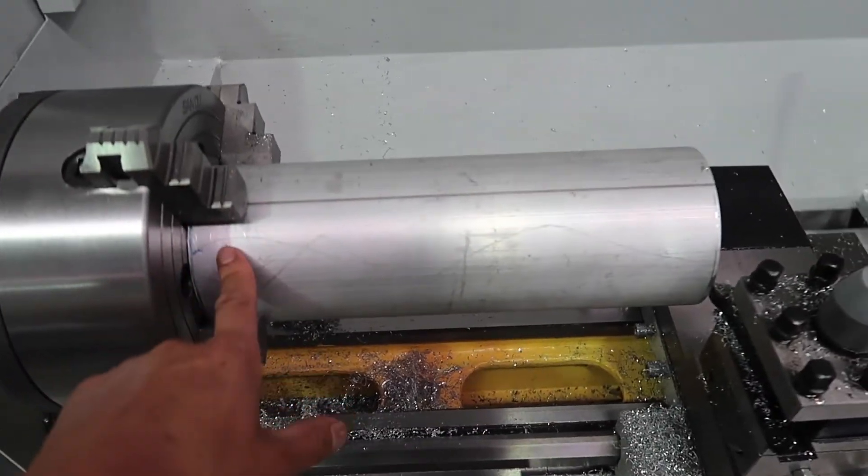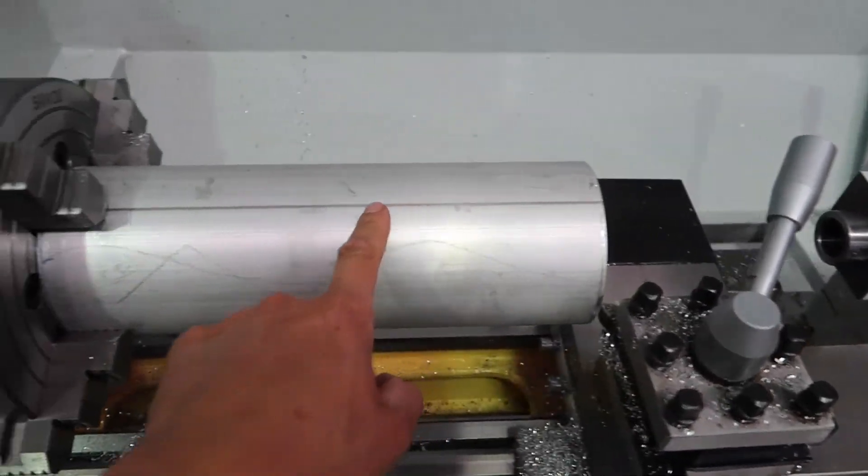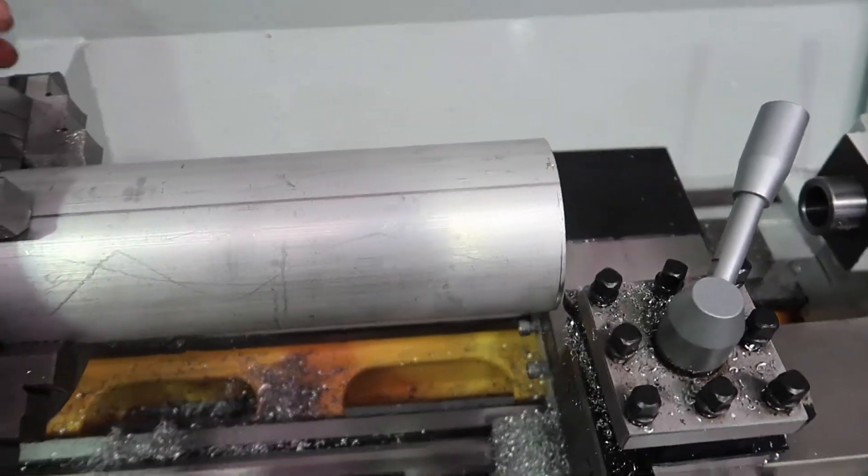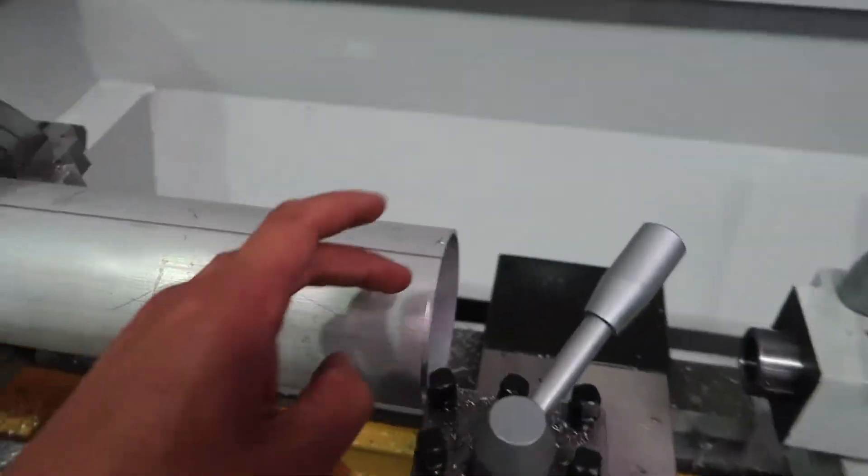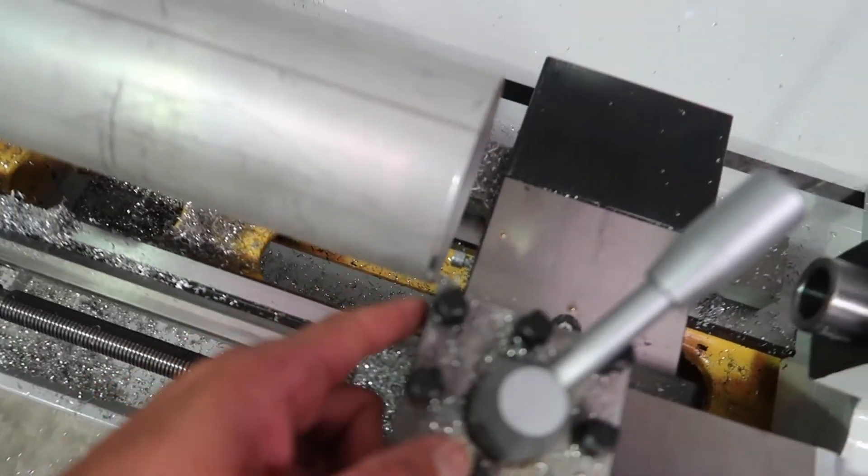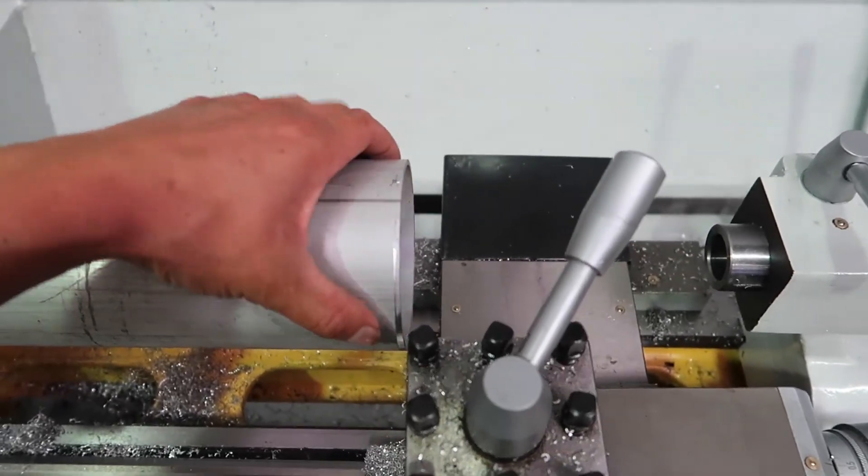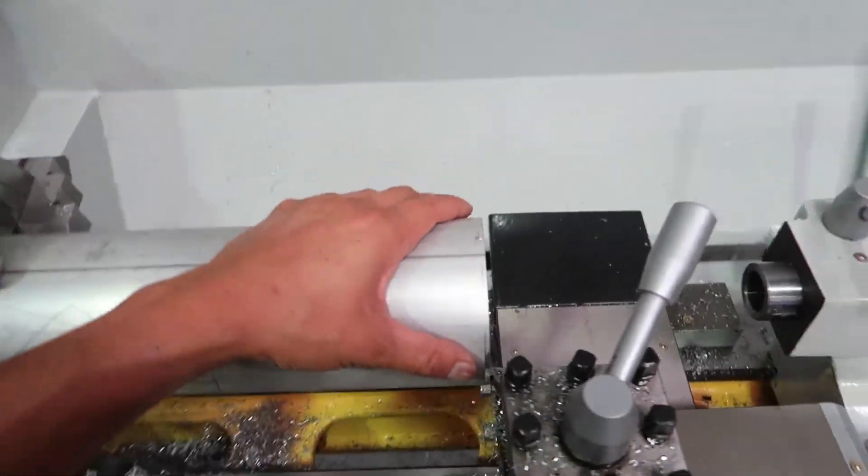All right, so that's been dialed in. That's been dialed in across there. And I ran the dial indicator along there and it seems completely level or very level. So now I'm going to take a face off there using that carbide bit. And then I'm going to round that to 100 millimeters to match the bearing.